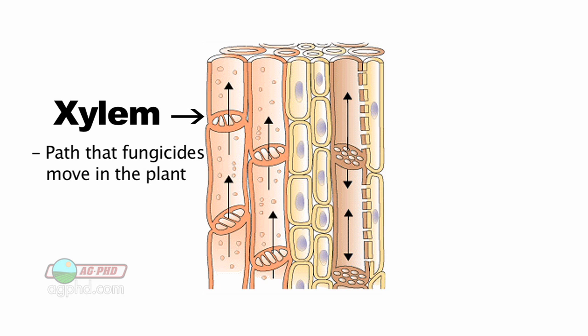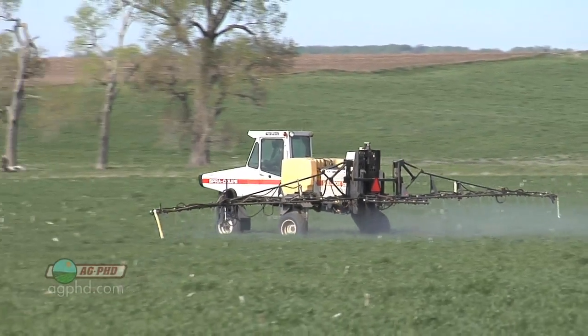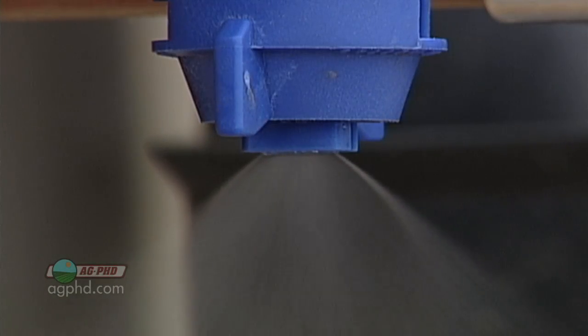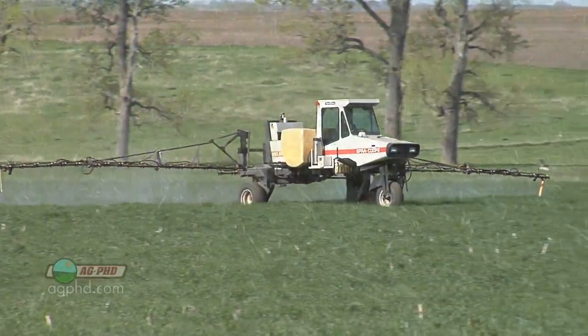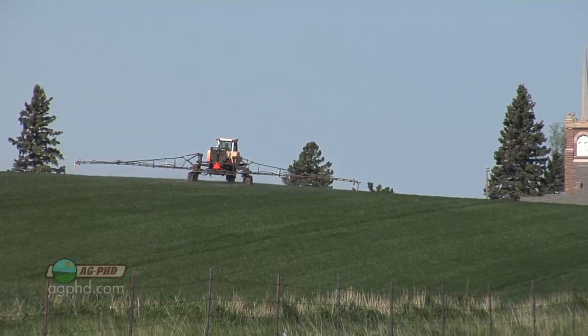Let's talk about how fungicides actually work. Fungicides move through the xylem in the plant — once they get into the plant, they only move through the xylem. There are two transport systems inside the plant: the xylem and the phloem. The xylem just moves up; the phloem moves up and down. So when you can only move up in a plant, pretty much all you can protect is what's there today. That's why you have to have great spray coverage with fungicides — use flat fan nozzles, as much water as you can, and a good adjuvant like Protex. You have to do everything possible to protect all the leaves, not just some of them.